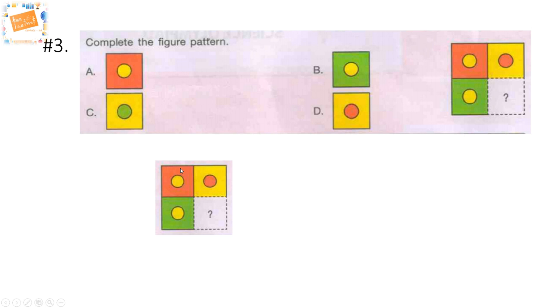Well, let's look at solving it together. The first block is actually option A. The second block, which is the yellow square with the orange circle inside, is option D. The third block with the green block and yellow circle inside is option B. So the remaining block that will complete the figure is option C.